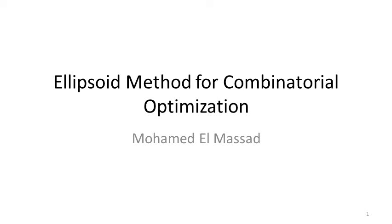Today I'm going to talk about the ellipsoid method for combinatorial optimization. The paper is actually really long — about 30 pages with around 20 theorems — so I opted to give a brief overview of the ellipsoid method: what it is, how it works, and what it is used for.